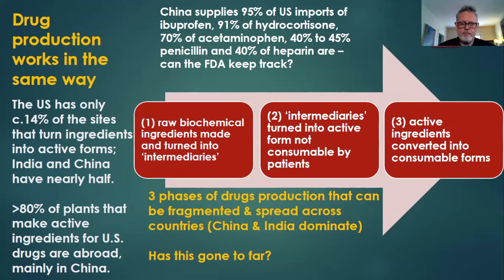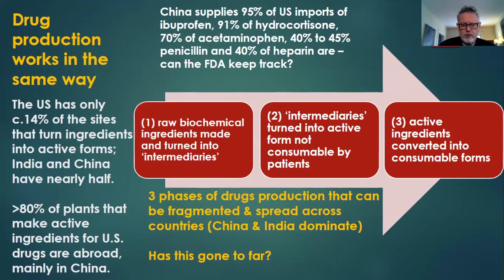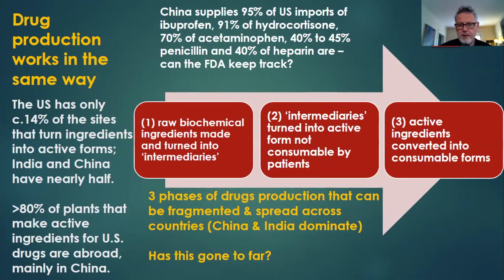Drug production works the same way. The three phases of drug production, illustrated in this slide, can be diced up and distributed internationally across different countries, which is the world we live in today. The U.S. is particularly exposed to international disruption because of its dependence on China. Only 14% of the sites that turn biochemical ingredients into active forms of drugs are in the United States. 80% of plants that make active ingredients for the U.S. are abroad, mainly in China. 95% of US imports of ibuprofen and 91% of hydrocortisone come from abroad.